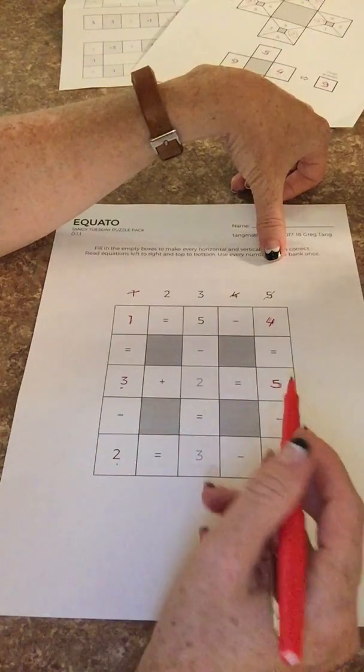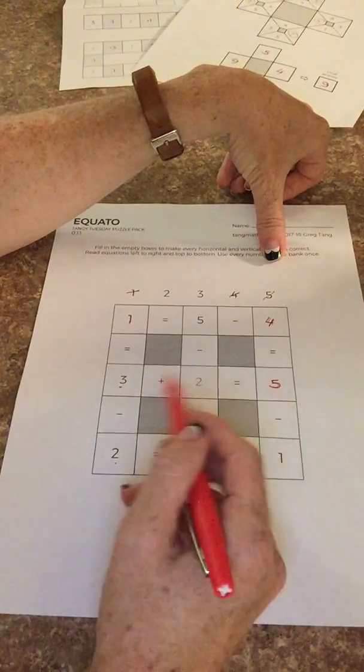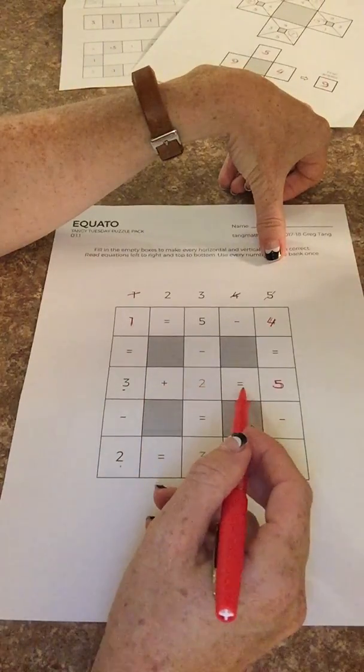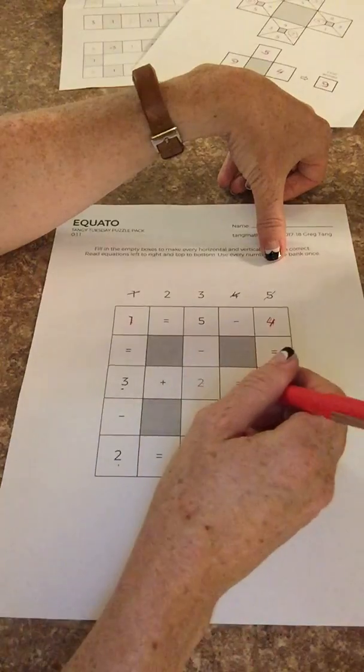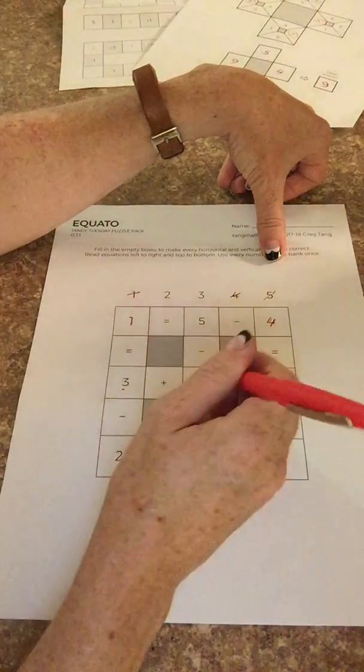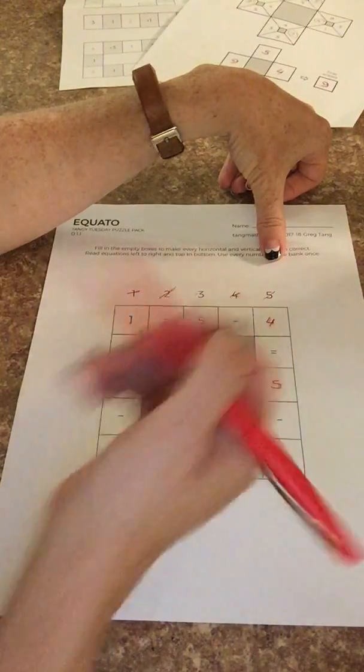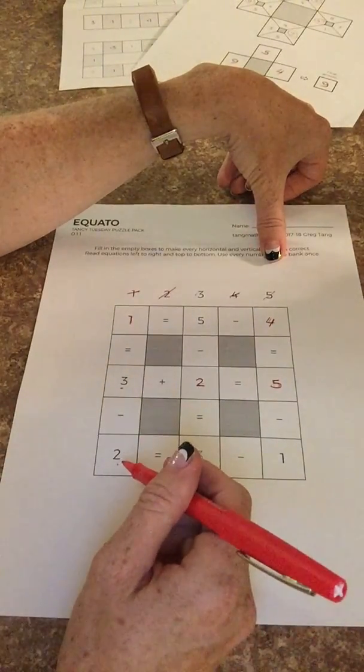This is a little easier for kids, they're more comfortable when the equal sign is in that spot. So it's going to be a two. Now there's only one digit left but you want to make sure that your child doesn't just fill it in randomly, that they think about it.